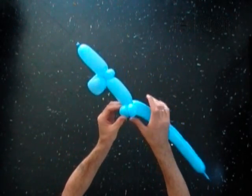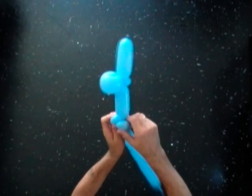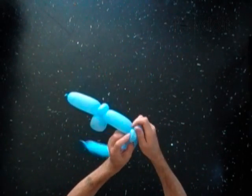Lock both ends of the fifth bubble in one lock twist. At the same time you lock both ends of the sixth bubble in one lock twist.